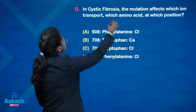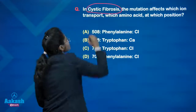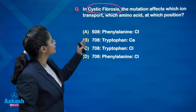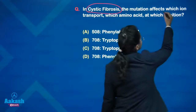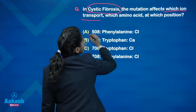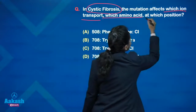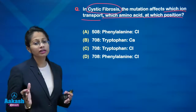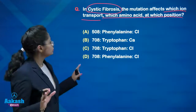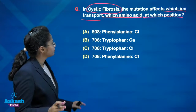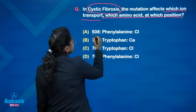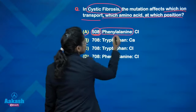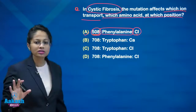Next: cystic fibrosis, a very common topic asked in INICET. In cystic fibrosis, the mutation affects which ion transport? The question asks which ion transport, which amino acid, and which position. This is a very direct question — you just have to remember it. Option A is the answer: position 508, phenylalanine is the amino acid, and the ion is chloride.